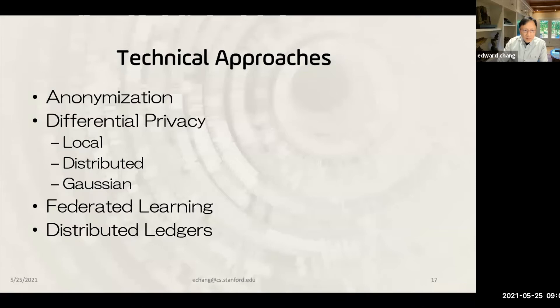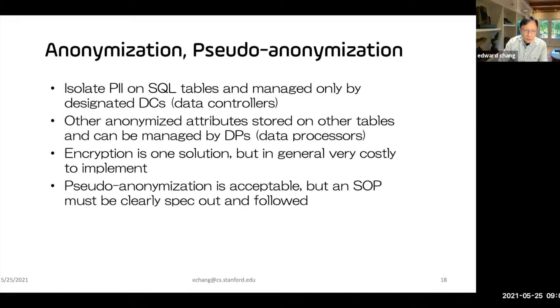There are three major technical approaches: first, anonymizing the data; second, differential privacy, which was popular before CCPA was activated; and third, federated learning, which is still very popular and pushed by Google. Finally, I'll talk about distributed ledgers.